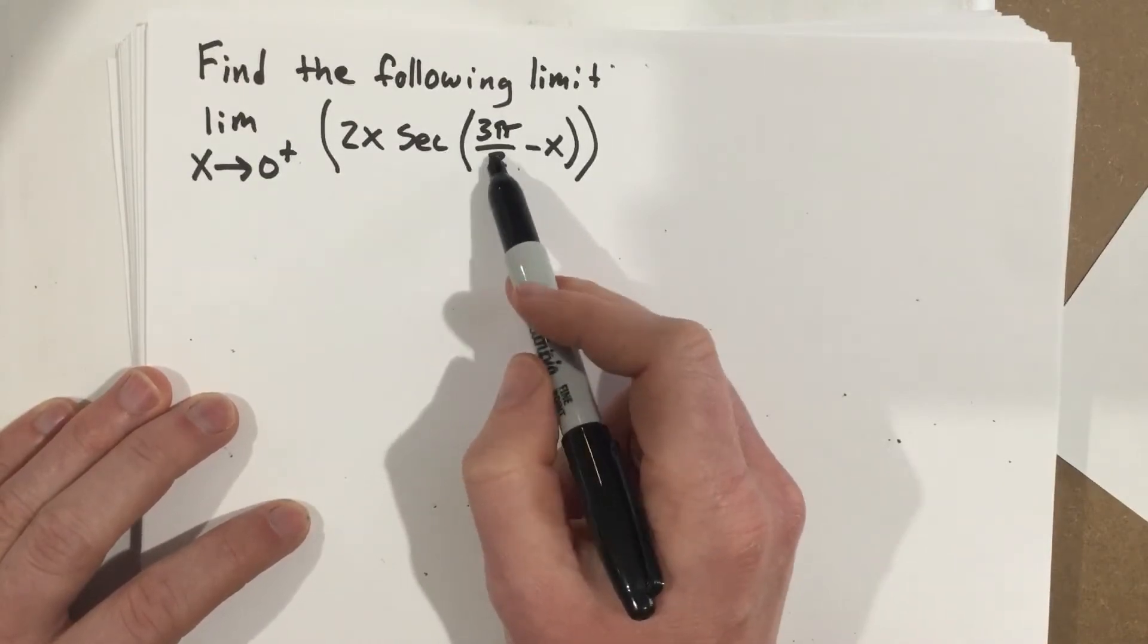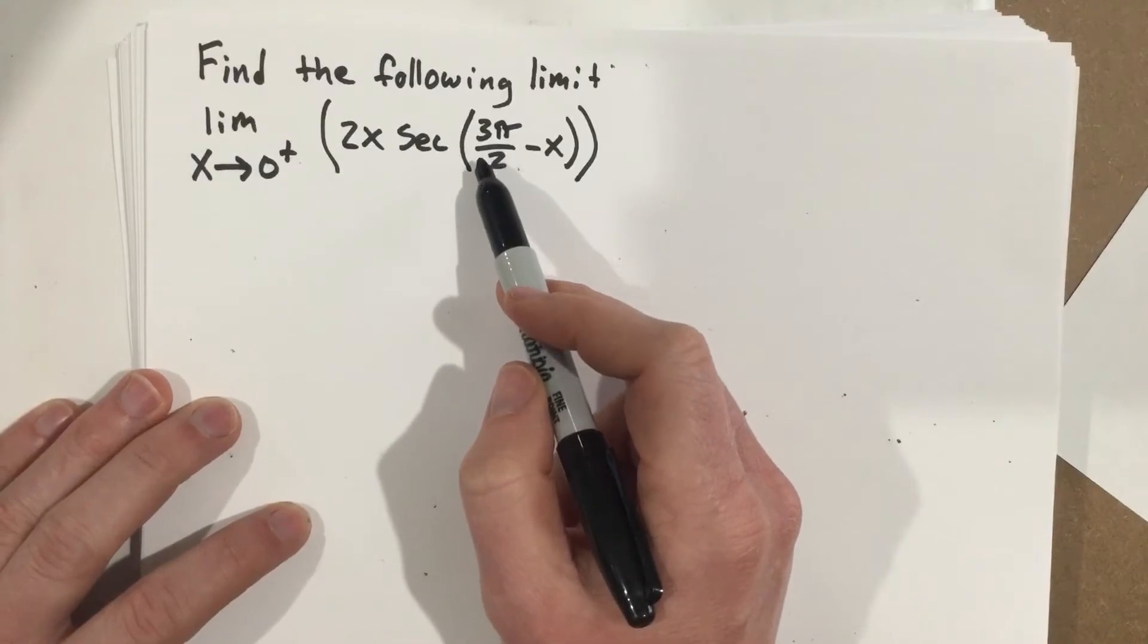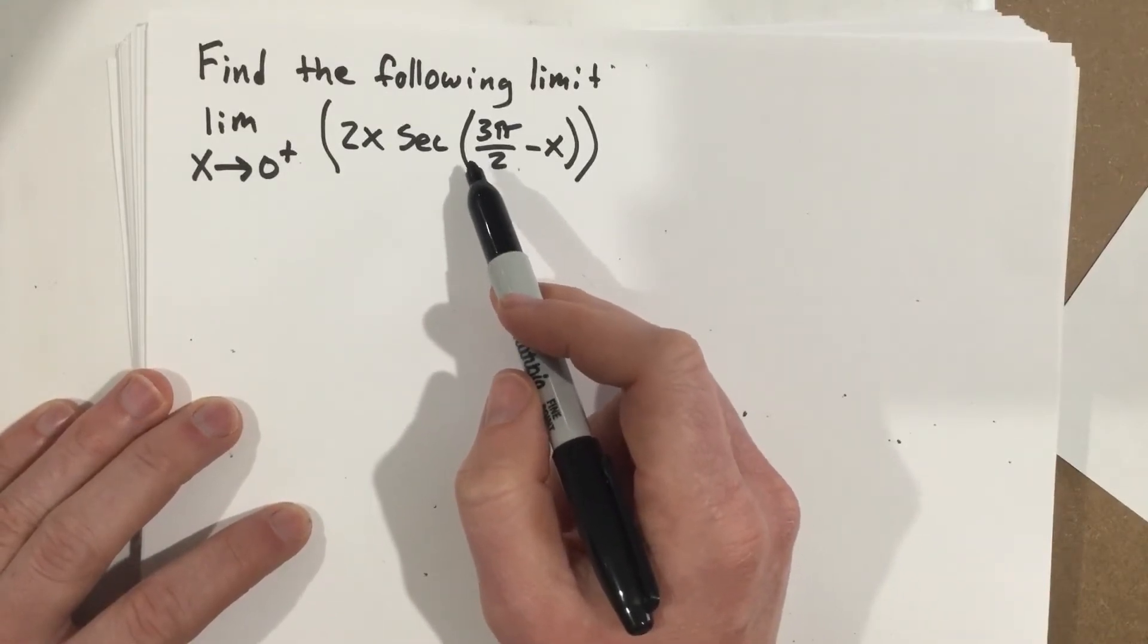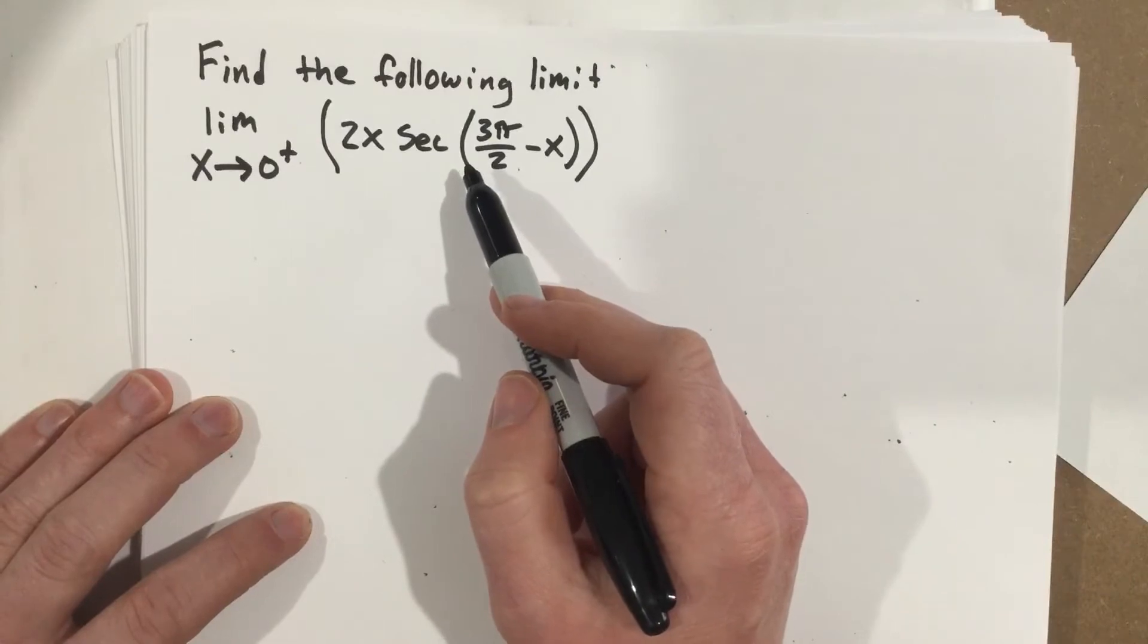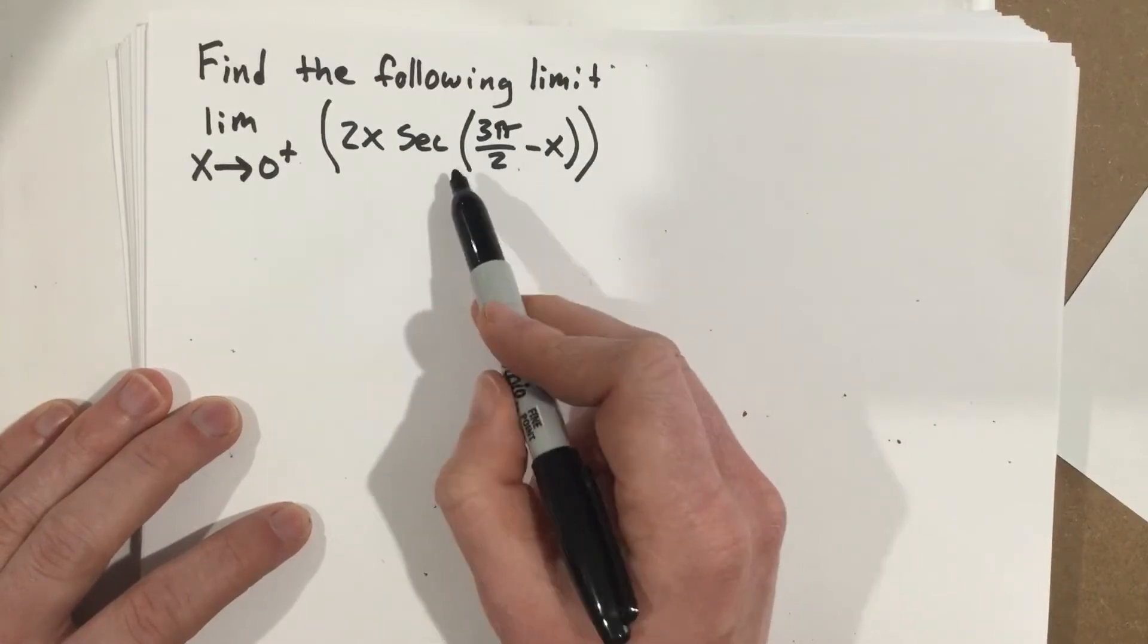So 1 over cosine of 3π over 2. Cosine of 3π over 2 is 0. So that would give you 1 over 0, and hence we have an indeterminate problem.